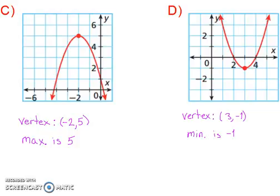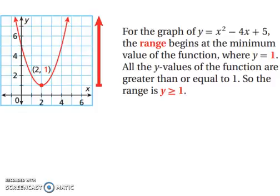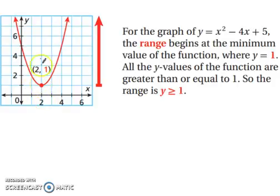For the graph of y equals x squared minus 4x plus 5, the range begins at the minimum value. Your range is all your y values, and the y value has a minimum but keeps going. So your range is y is greater than or equal to 1, because your graph is all larger than 1. Your domain keeps going left and right and will hit every number, so your domain is all real numbers.